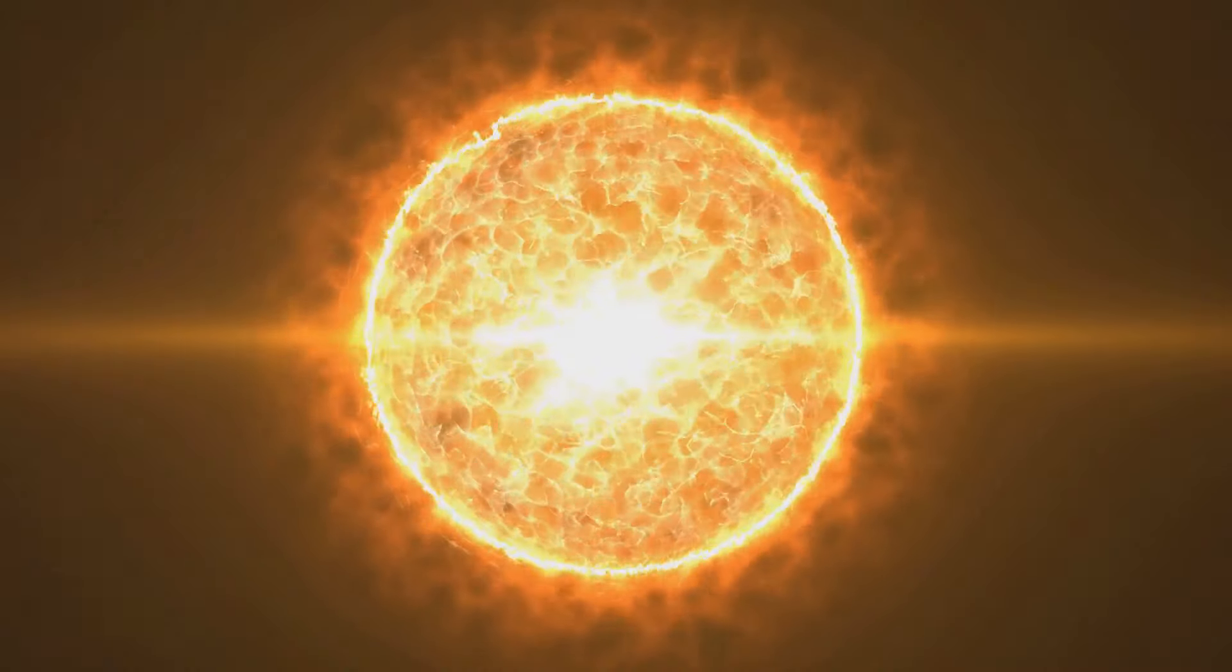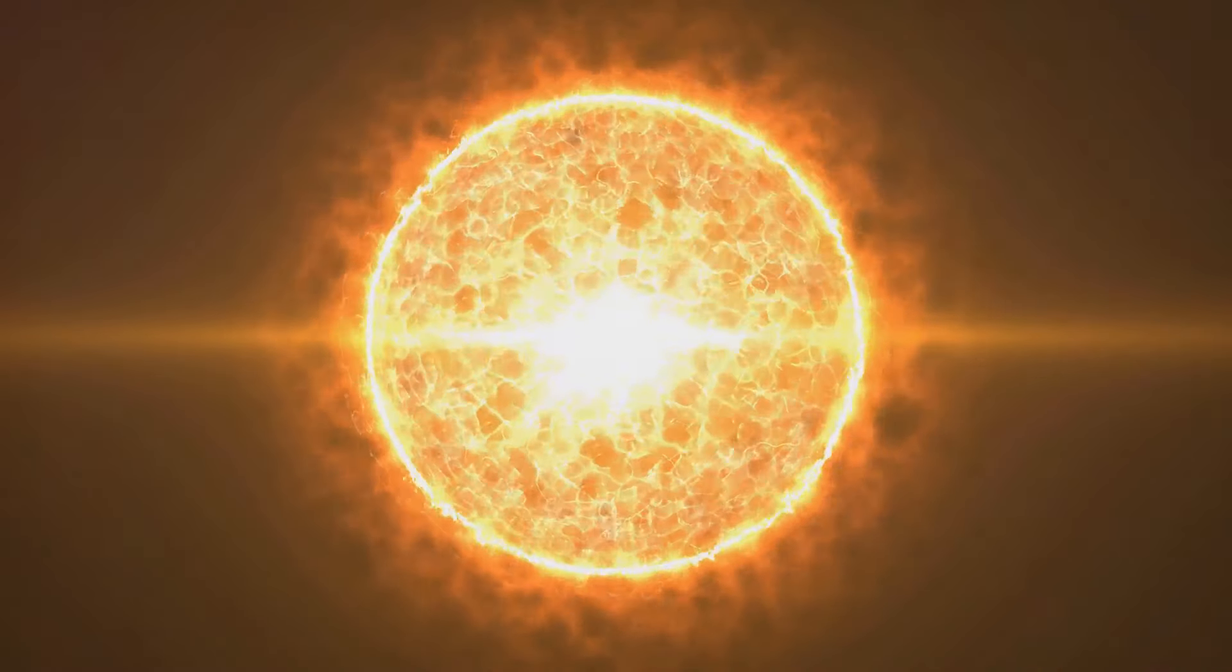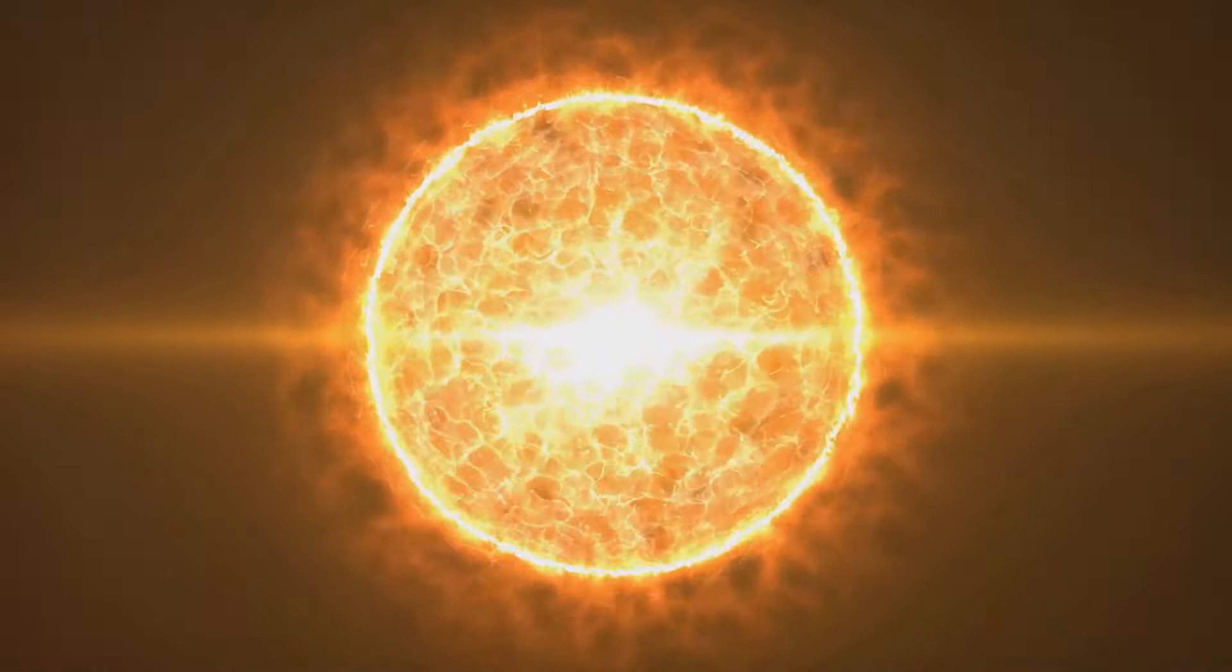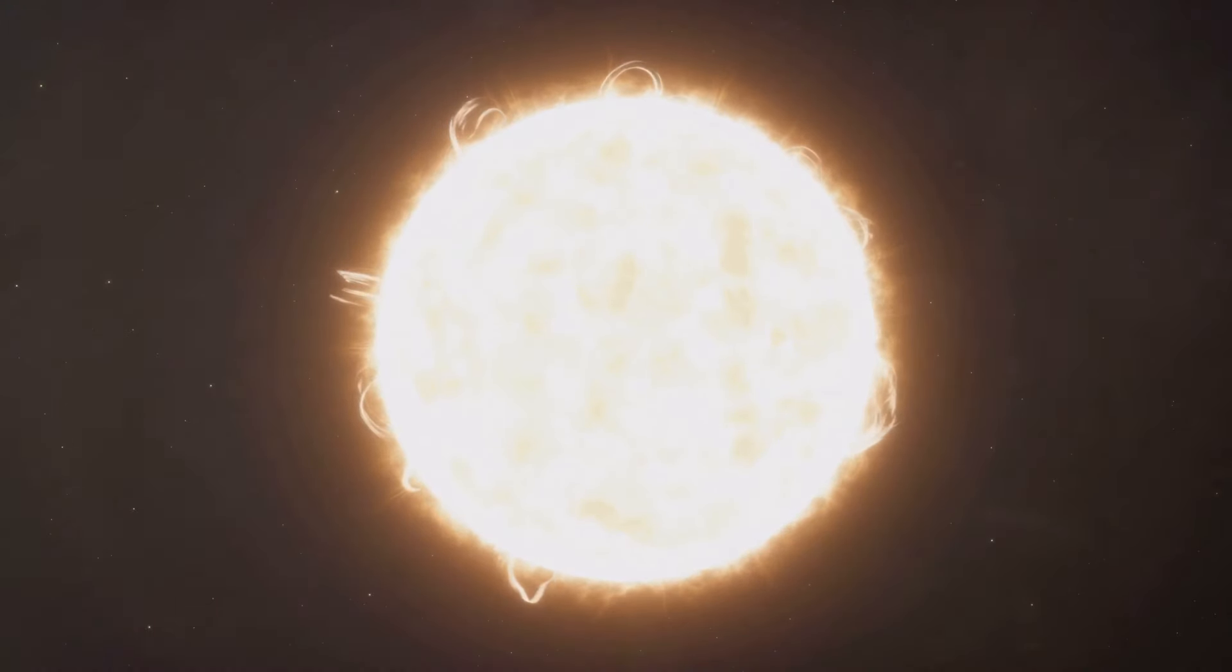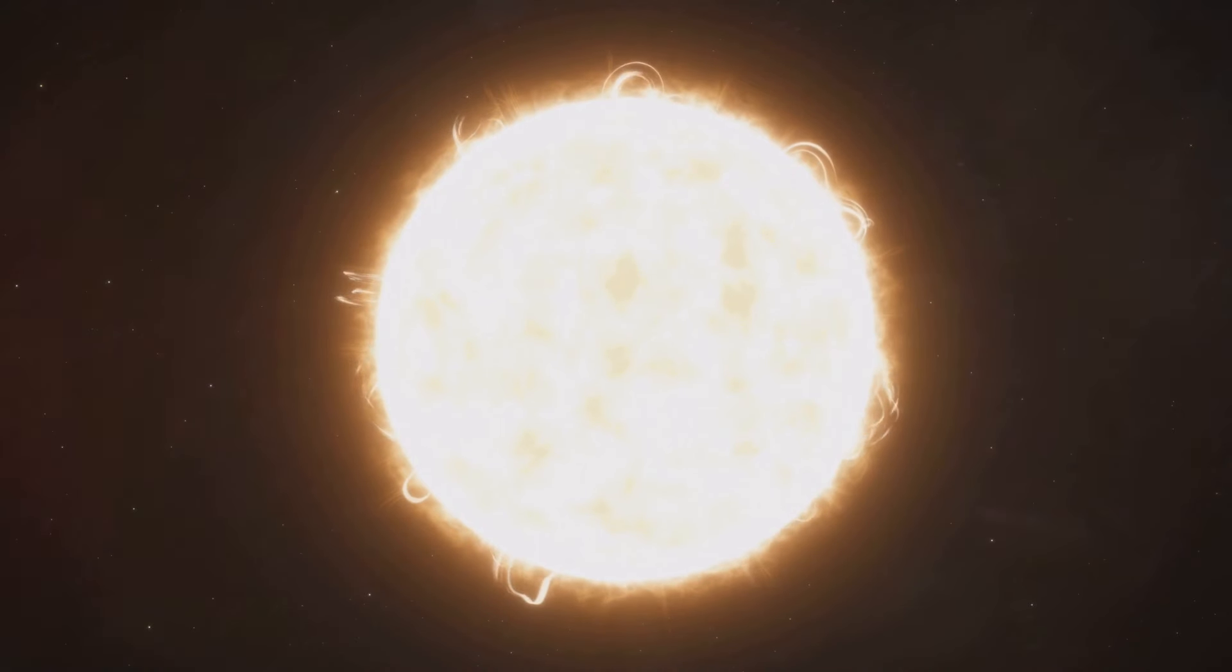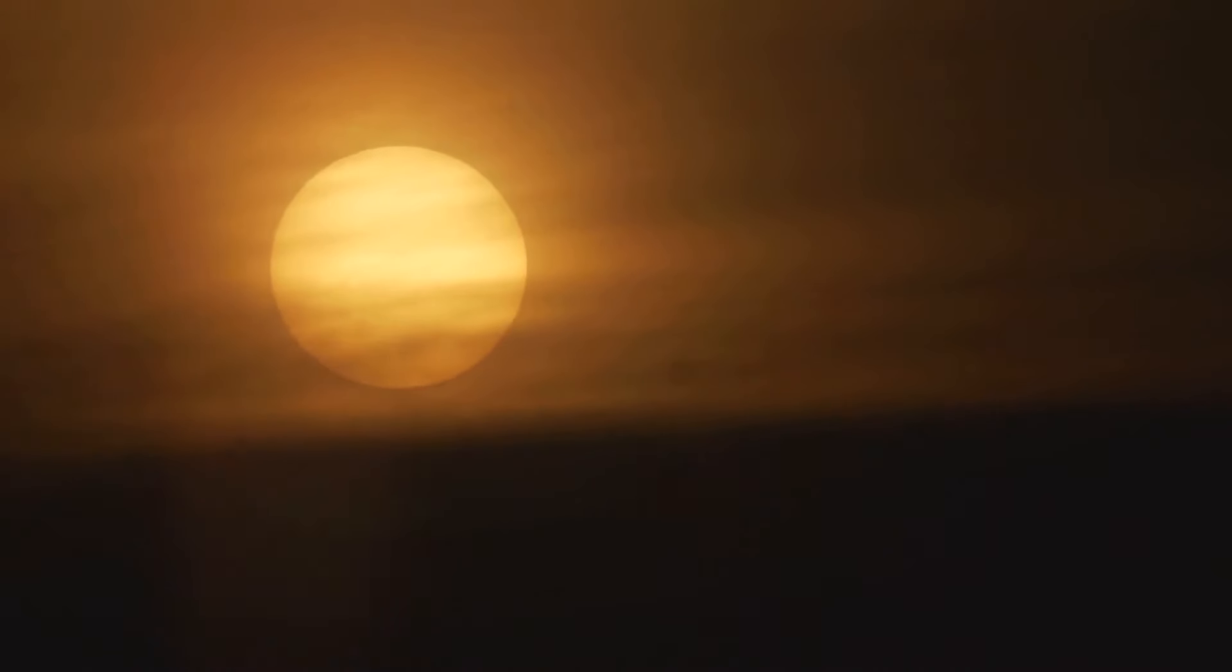Unlike our sun's blindingly bright white light, Betelgeuse glows with a distinctive reddish-orange hue. This vibrant color is a direct result of its surface temperature. Cooler stars emit light at longer wavelengths, which appear red or orange to our eyes. While our sun has a surface temperature of about 5,500 degrees Celsius, Betelgeuse's surface temperature is around 3,300 degrees Celsius.